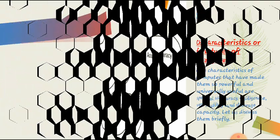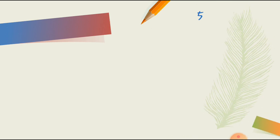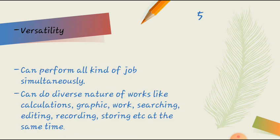Let us start with the first characteristics of the computer, that is versatility. Normally, characteristics implies the ability of a person or a machine to perform a particular task in a specific way. For example, versatility means the capability of a computer, which can perform all kinds of jobs simultaneously.